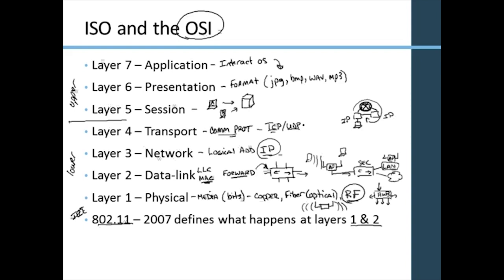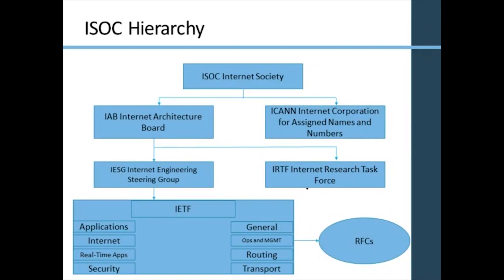Hopefully that's built a good foundation. We obviously are going to focus on layer one and layer two. The segmentation I mentioned - that's where we'll get into VLANs and have a good understanding of how we use VLANs to separate our traffic, and that also happens at layer two. Now let's take a look at the different groups we work with under the Internet Society, or the ISOC.